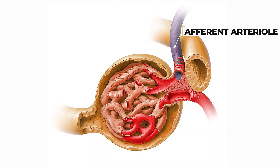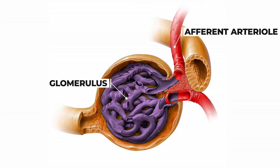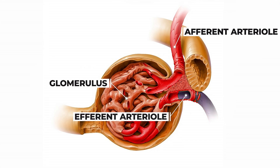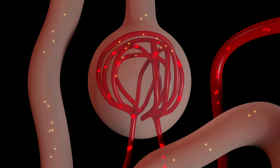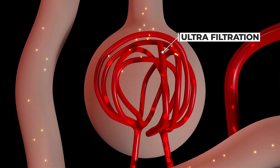When blood enters the glomerulus through the afferent arteriole, the blood pressure in the glomerulus becomes very high. This happens because the efferent arteriole is narrower, causing the blood to have difficulty leaving at the same rate it entered, increasing the pressure. This increased pressure helps waste materials and some essential nutrients to move from the capillaries into the Bowman's capsule's lumen. This process is called ultrafiltration.